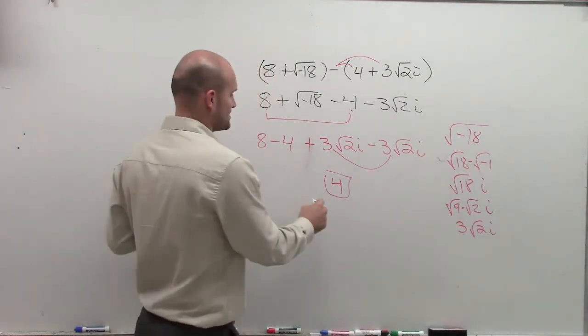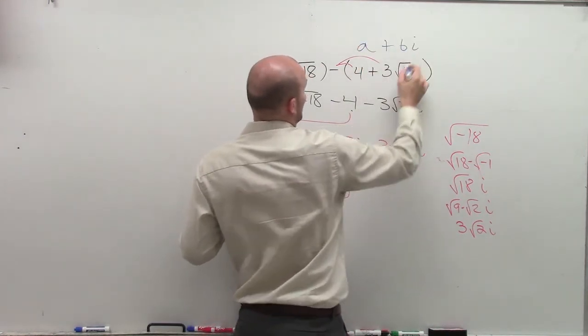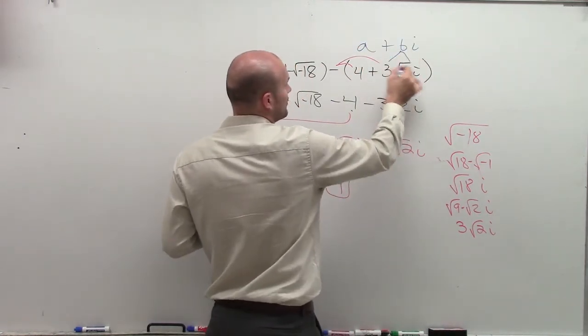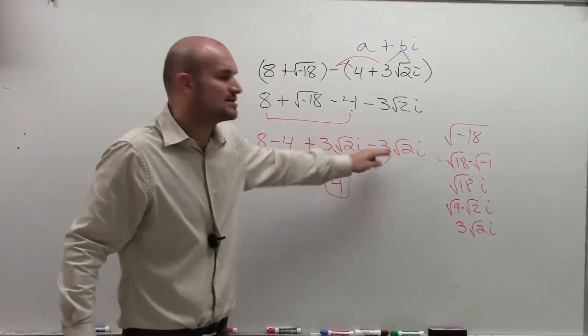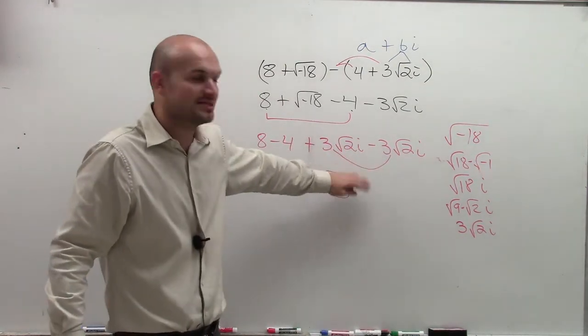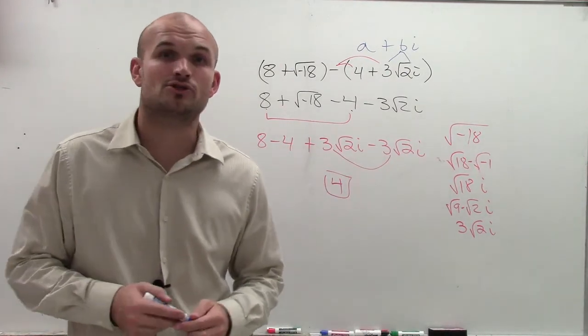Please do remember that all complex numbers can be written in the form of a plus bi, where in this problem, b was 3 times square root of 2. However, in this problem, when combining my complex numbers, they were eliminated and I'm just left with the real number 4. There you go. Hope you enjoyed.